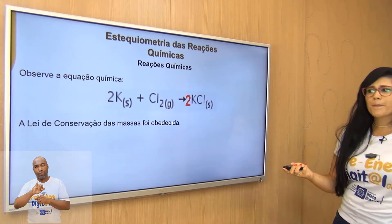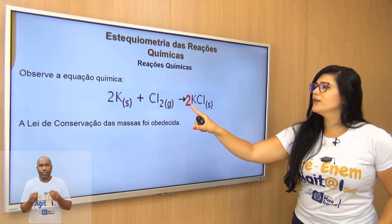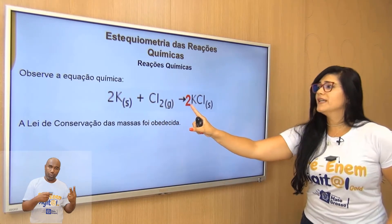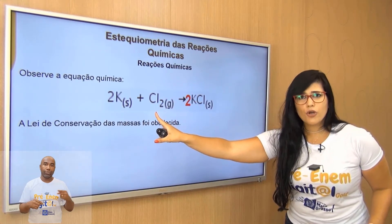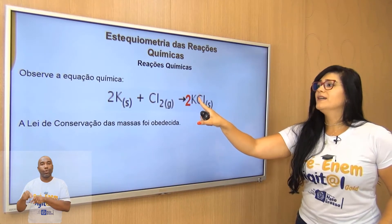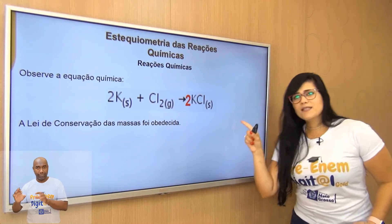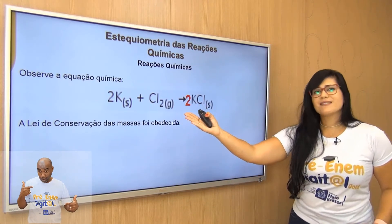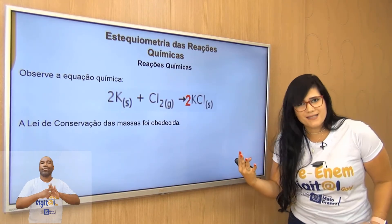Vamos balancear essa equação. Coloco um coeficiente 2 na frente do cloreto de potássio. Assim, tenho no início 2 átomos de potássio e 2 de cloro; e no final, esse coeficiente 2 multiplica tanto o potássio quanto o cloro — ficando também 2 potássios e 2 cloros. A equação está balanceada, seguindo a lei de conservação das massas — estequiometricamente balanceada.